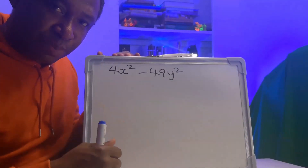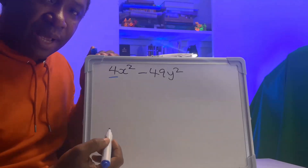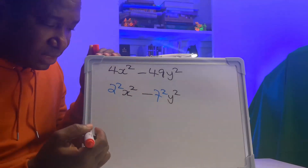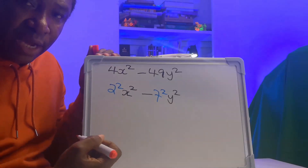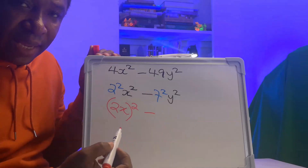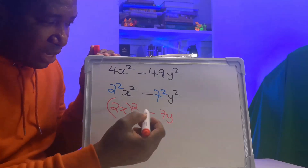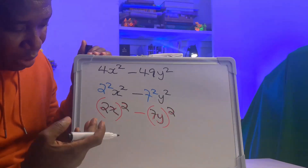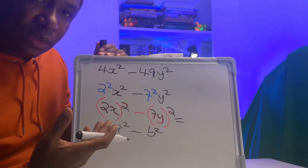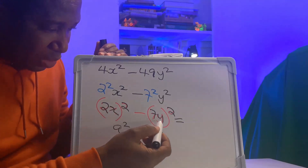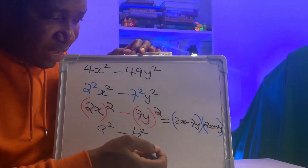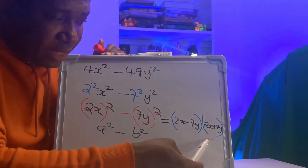Let's evaluate this expression: 4 can be expressed as 2 squared, and 49 can be expressed as 7 squared. Since 2 squared is multiplying x squared, we can rewrite it as (2x) squared. And 7 squared multiplying y squared becomes (7y) squared. We now have (2x) squared minus (7y) squared, which is difference of two squares, giving (2x minus 7y) in brackets times (2x plus 7y) in brackets.